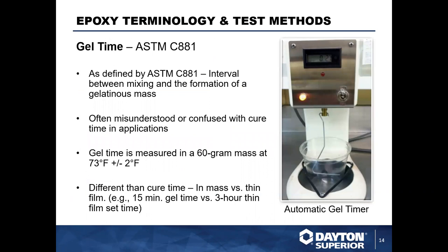Gel time as defined by C881 is the interval between mixing and the transformation of the material into a gelatinous mass. It is often misunderstood and confused with cure time. Gel time is measured in 60-gram masses at 73°F ± 2°F. This is different from cure time, which involves a thin film — specifically a three-hour thin film set.